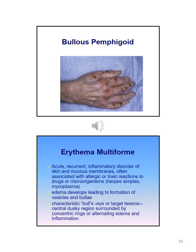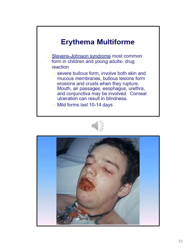Erythema multiforme is an acute recurrent inflammatory disorder of the skin and mucous membranes, often associated with allergic or toxic reactions to drugs or microorganisms. Edema develops leading to formation of vesicles and bullae. A common characteristic includes bull's eye or target lesions. Stevens-Johnson syndrome is the most common form in children and young adults and is caused by a drug reaction. In this disorder there are severe bullous formations involving both skin and mucous membranes. The mouth, air passages, esophagus, urethra, and conjunctiva may be involved, and corneal ulceration can result in blindness. Mild forms last approximately 10 to 14 days.